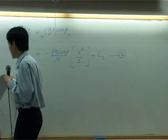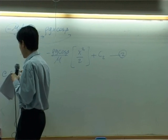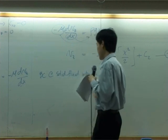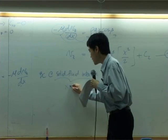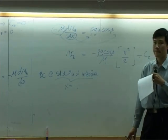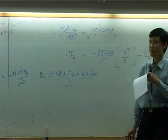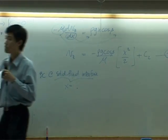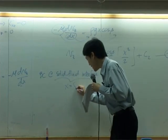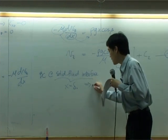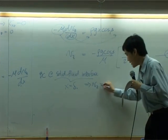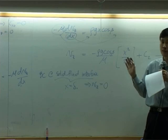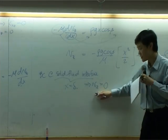The first one, the boundary condition would be at solid fluid interface. This one means x equal to what? Thickness here is delta, so this means that at x equal to delta, velocity vz equal to zero. Simply because the solid does not move, so therefore liquid at that interface has zero velocity as well.